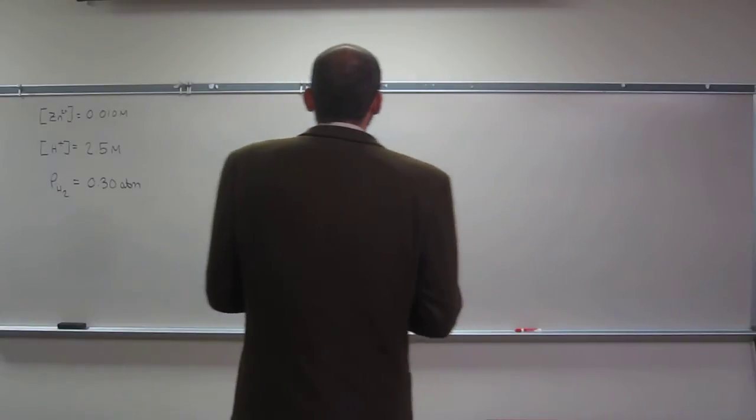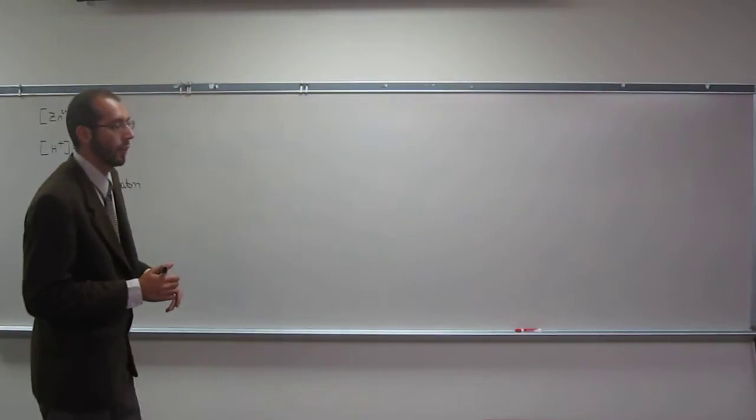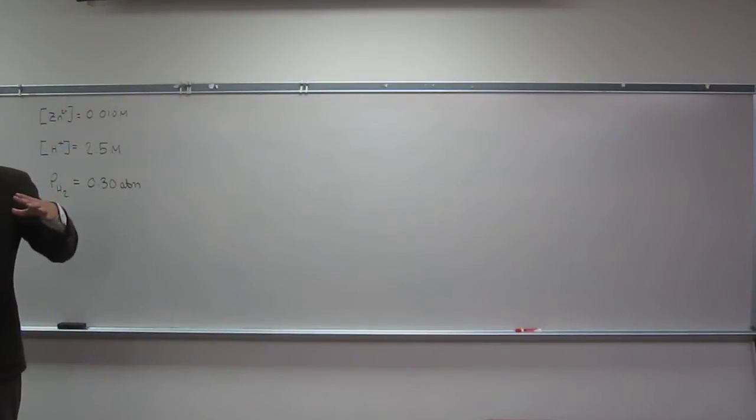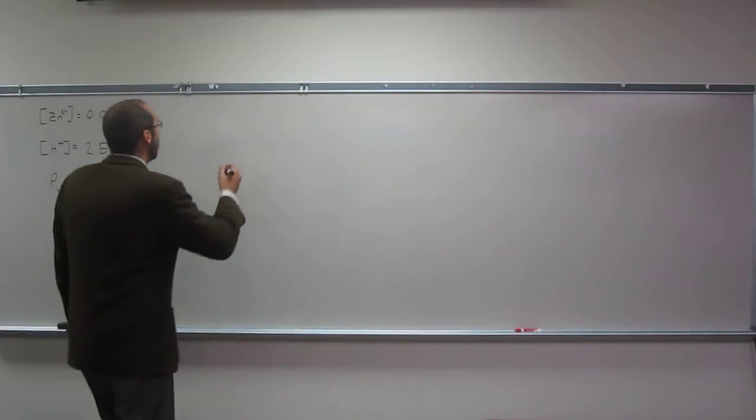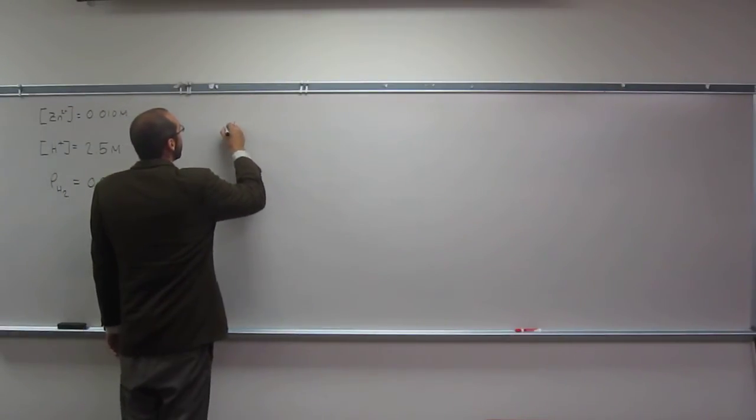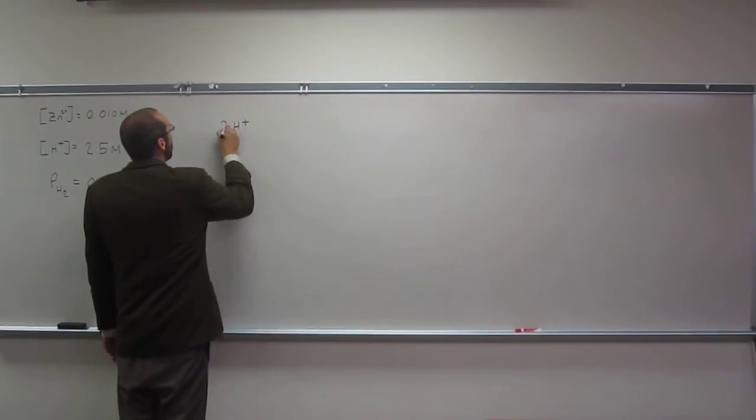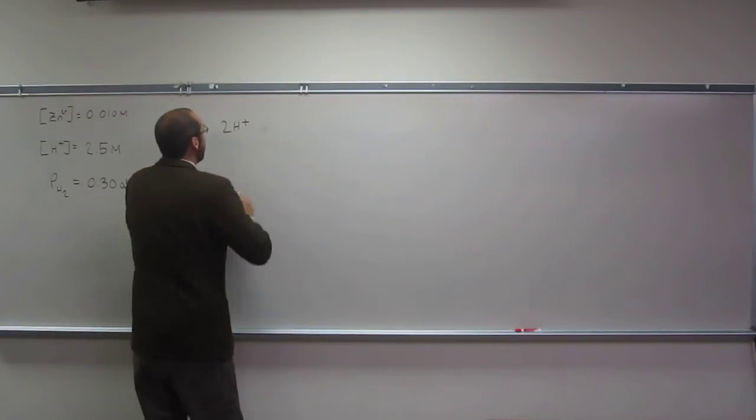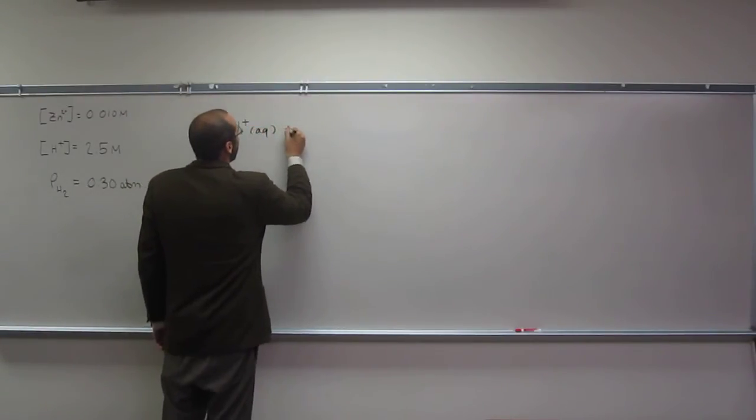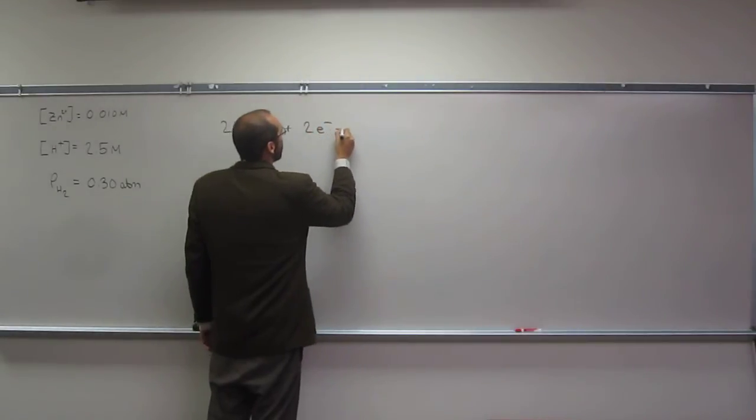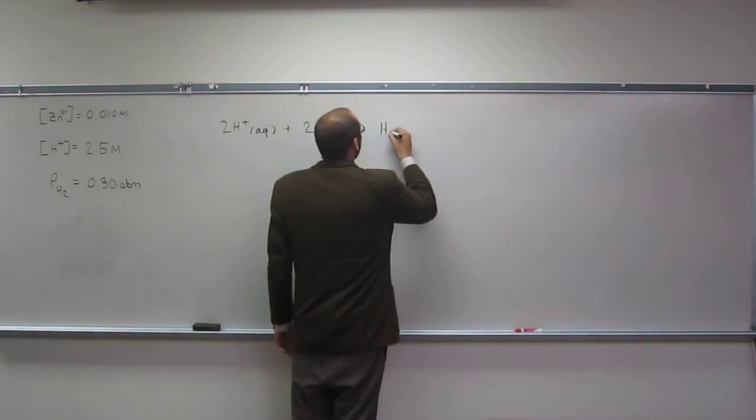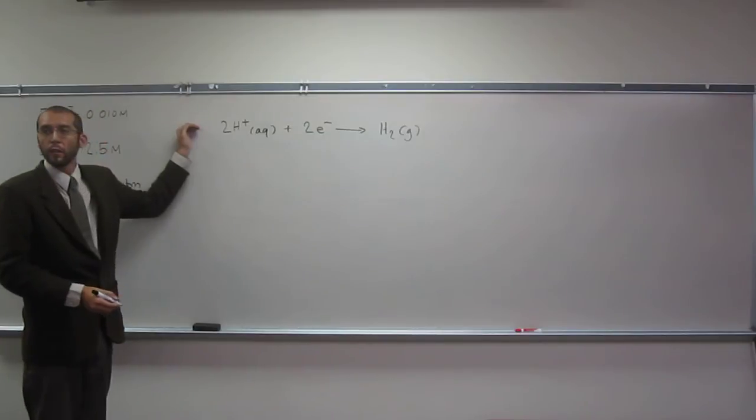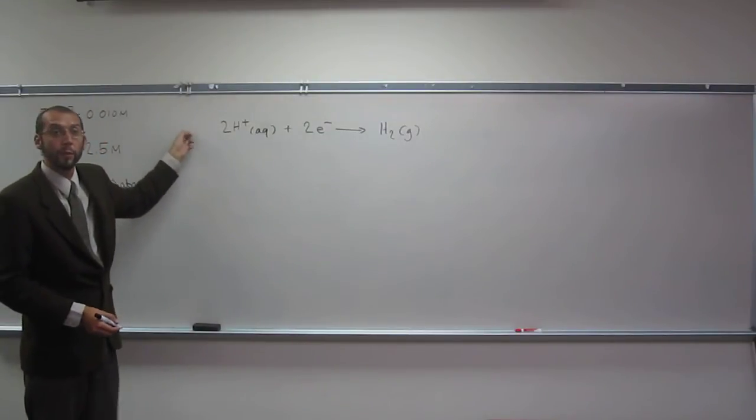So the first thing we want to do is balance the two half reactions. So if you need to, go back to your half-reaction list and look at them. Okay, so we're going to have, in this case, a proton. So two protons plus two electrons goes to H2 gas. You guys remember the potential for that one? Zero, right? That's the reference potential.